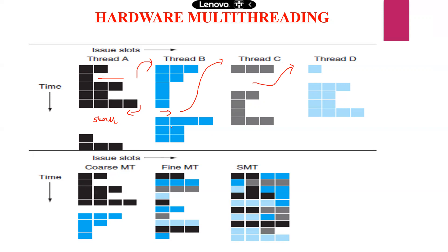Coarse-grained multi-threading cannot execute all threads simultaneously and everything proceeds vertically. In fine-grained multi-threading, instead of vertical execution, it moves horizontally. Thread A executes first, then Thread B, then Thread C, then Thread D, then back to Thread A, Thread B, Thread C, Thread D — executing horizontally. It utilizes all threads more effectively than coarse-grained multi-threading, but the drawback is it cannot fulfill the entire slot, so slot wastage occurs more.